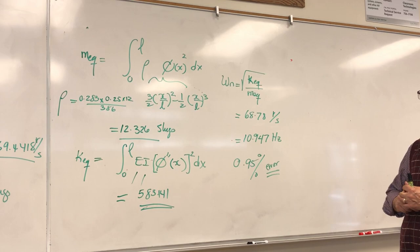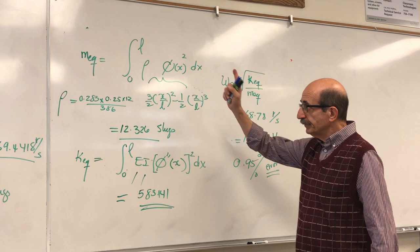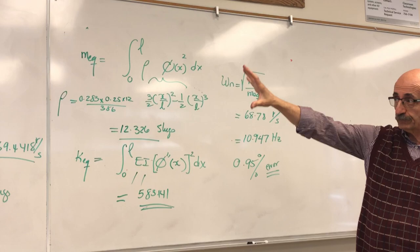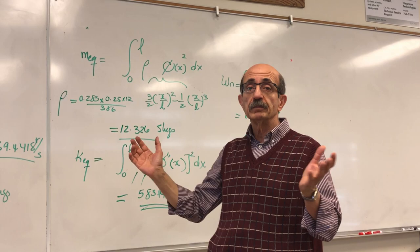If you apply this to your own system, you'll be amazed at how close the Rayleigh's method result is to the exact solution — typically 2 to 3% error at most. One key caution: make sure you have a thin beam, not a plate, by ensuring a proper aspect ratio.